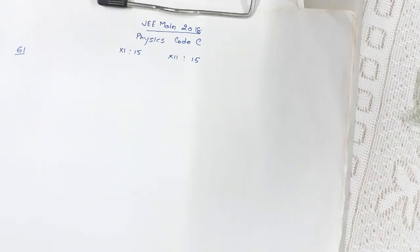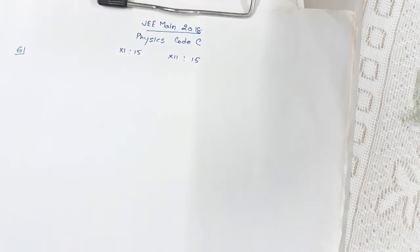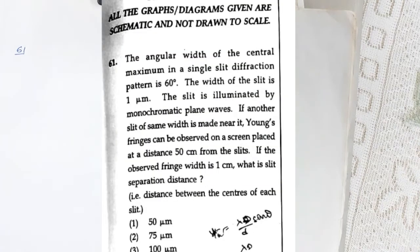Hello everyone, welcome to my channel. In this video I am going to discuss the JEE Main 2018 paper Code C. As you can see in this paper there were total 30 questions — 15 questions were from class 11 and 15 questions were from class 12. The physics part starts from question number 61.